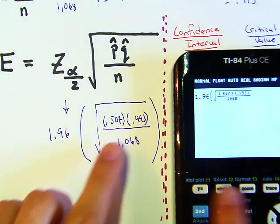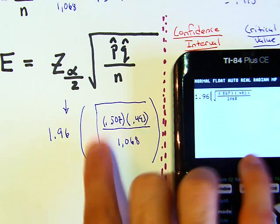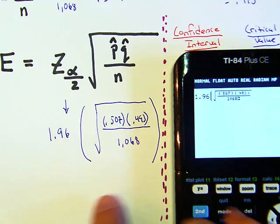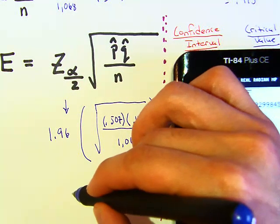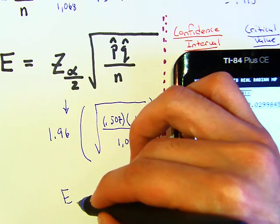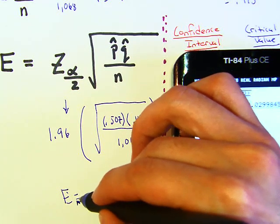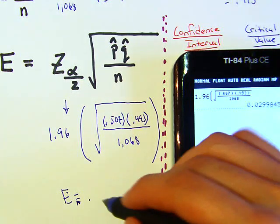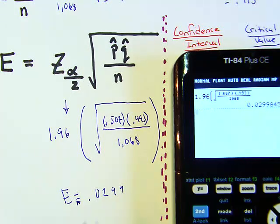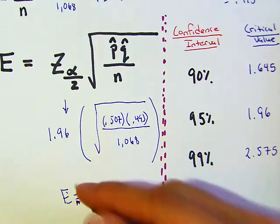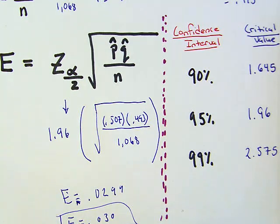If you don't have a calculator like this, what you could do is you could just do everything one at a time. Maybe multiply these two, then take the square root, and then multiply it by 1.96. But you could do this in one shot and you get... E is equal to 0.030 when you round it. So that's our E value.